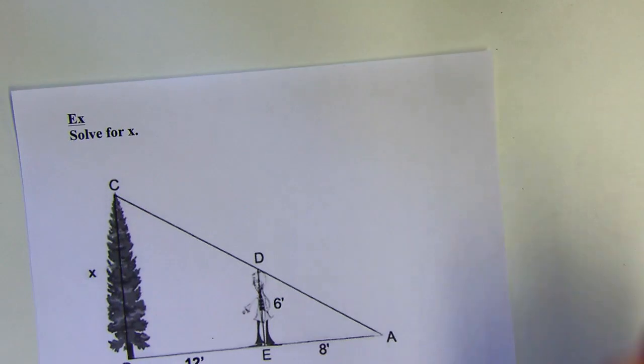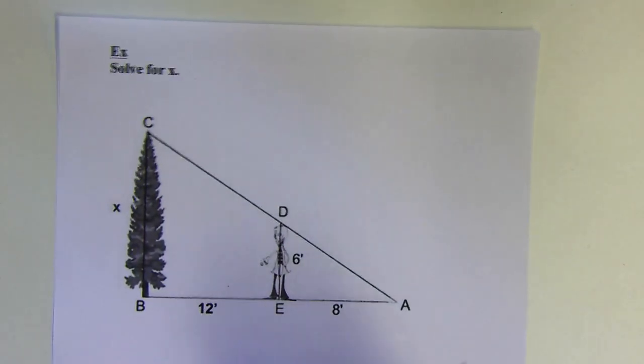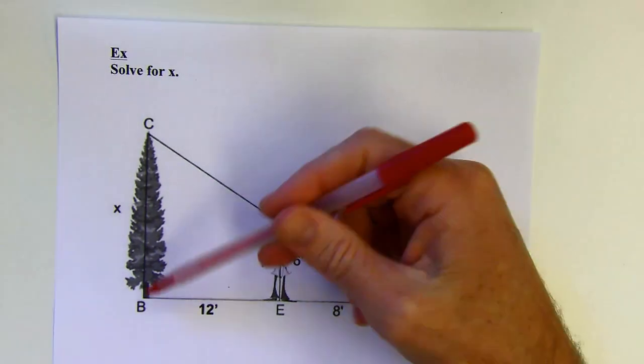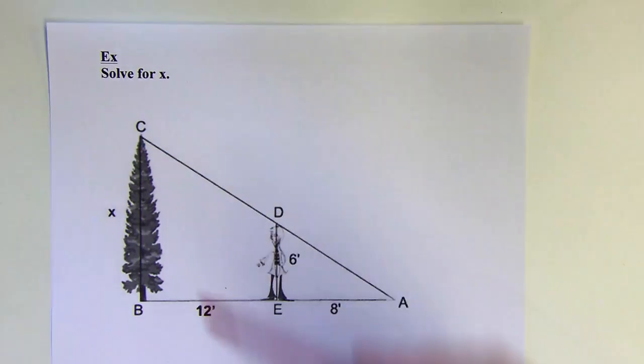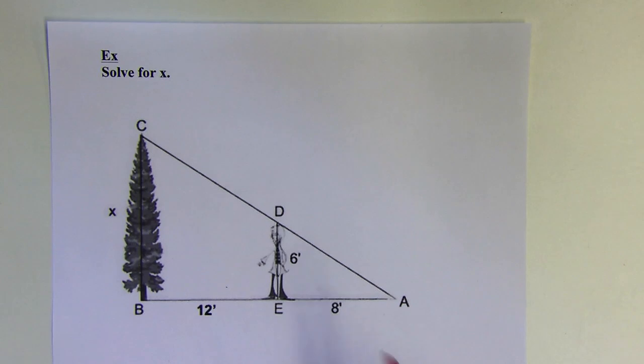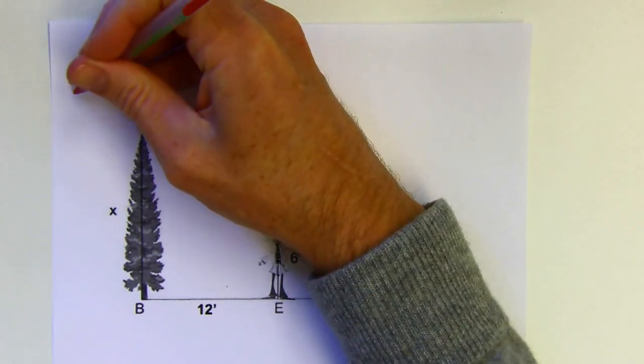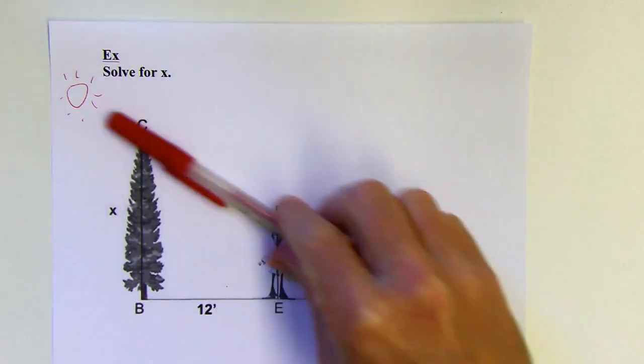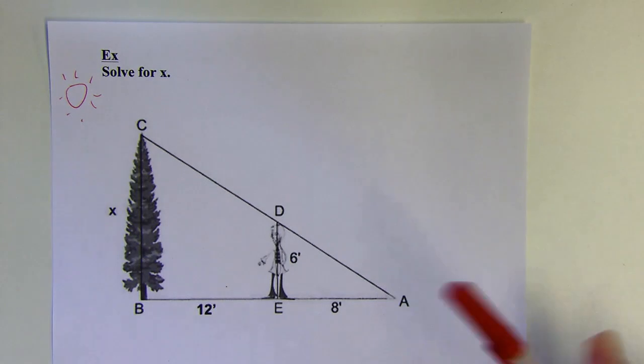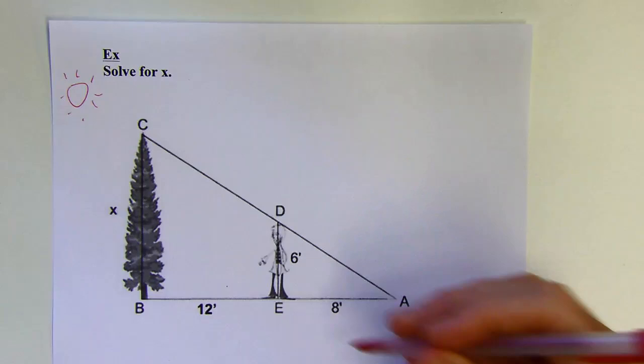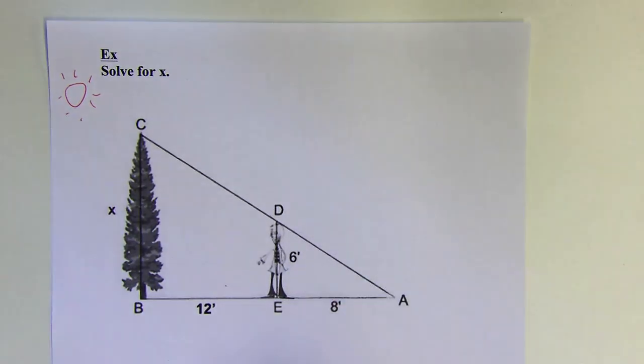This says solve for x. We've got a six-foot tall person and we're going to figure out how tall this tree is and this is kind of neat because you could actually use this in real life. Let's say the sun is up here and you're standing in the shadow of the tree. If you line up the top of your head right with the shadow and you know how tall you are, then you can figure this out by measuring the ground distances.